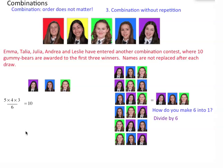What if we pick Julia first — Julia, Andrea, Leslie — and that's it. There's no other combination with Julia first that we haven't already picked. Like Julia, Emma, Leslie — we already have that listed. And that's it. That's ten: one, two, three, four, five, six, seven, eight, nine, ten. We end up getting ten.